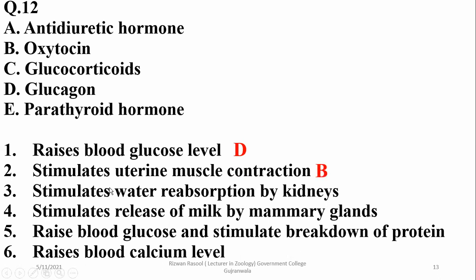Oxytocin stimulates uterine muscle contraction and also stimulates release of milk by the mammary glands. ADH stimulates water absorption by the kidneys. Glucocorticoid raises blood glucose and stimulates breakdown of protein, because glucagon increases blood glucose mainly by the breakdown of glycogen. Parathyroid hormone increases blood calcium level.